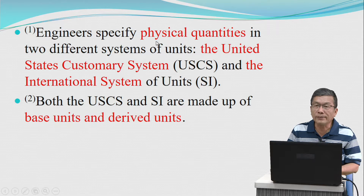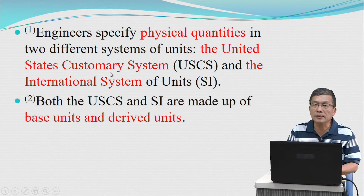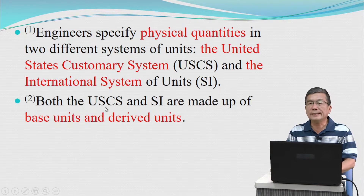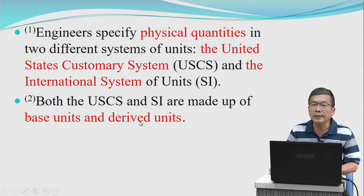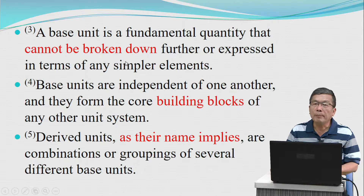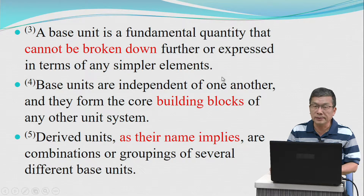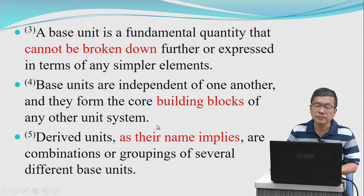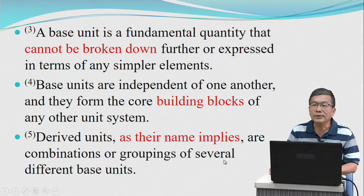Engineers specify physical quantities in two different systems of units: the United States customary system and the international system of units. Both the USCS and SI are made up of base units and derived units. A base unit is a fundamental quantity that cannot be broken down further or expressed in terms of any simpler elements. Base units are independent of one another and they form the core building blocks of any other unit system. Derived units, as their name implies, are combinations or groupings of several different base units.